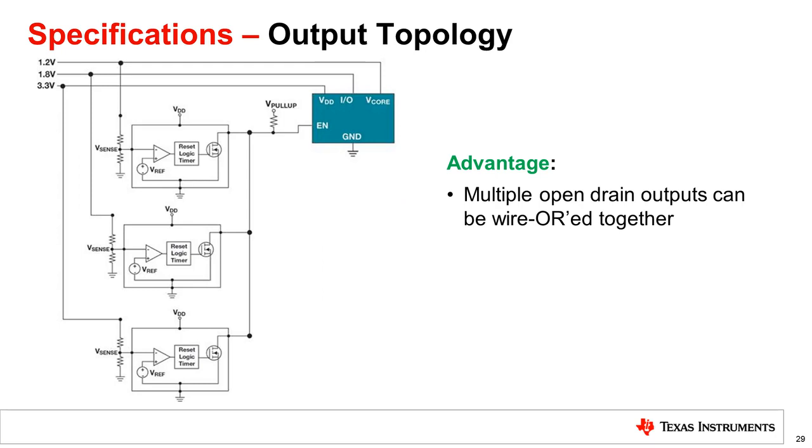Another advantage of the open drain output is that multiple open drain outputs can be wired or together. This is useful if a device has multiple voltage rails that need to be monitored but only has one enable pin. If any of these supervisors pull to ground to signal an under voltage condition on its monitored voltage rail, the output will be pulled to ground regardless of the other monitored voltage rails.